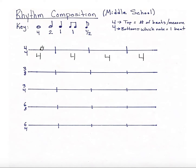But now because I've used that rhythm, I can't use it in any of the other measures. So in measures 2, 3, and 4, I need to find different ways to get to 4 beats. It's the same thing for your 3/4 measures and your 6/4 measures — you follow the key exactly and just make sure that you get to 4 different ways of finding however many beats you have. So in the 3/4 measures you're finding 4 different ways to get to 3 beats, and for 6/4, you're finding 4 different ways to get to 6 beats.